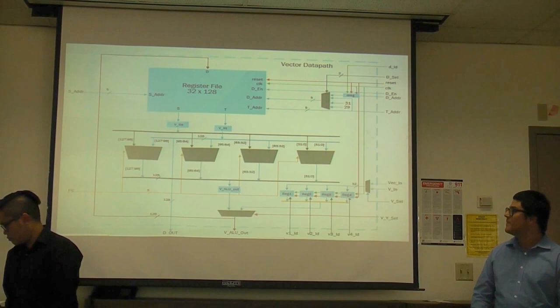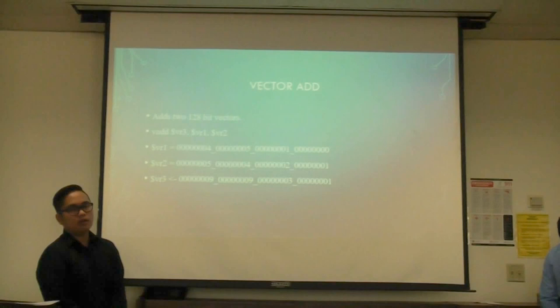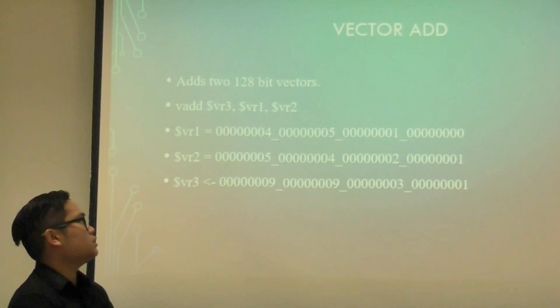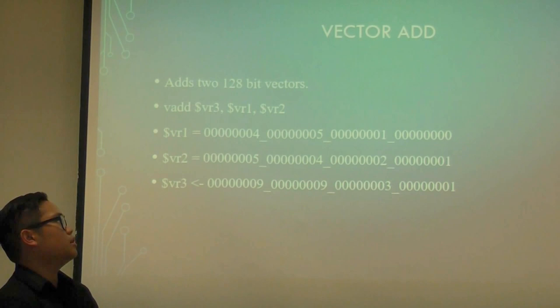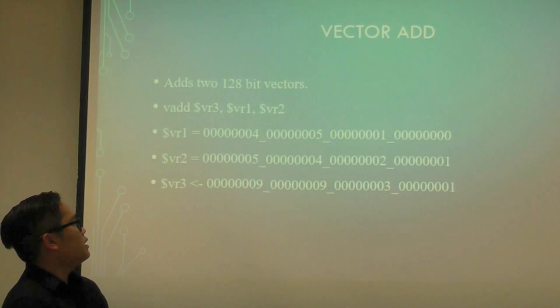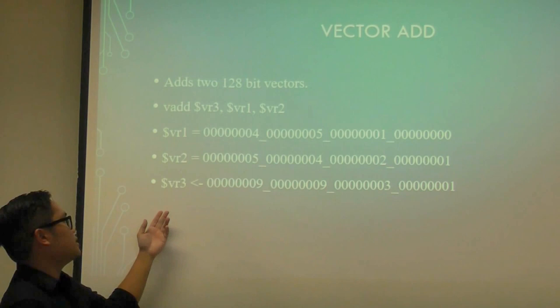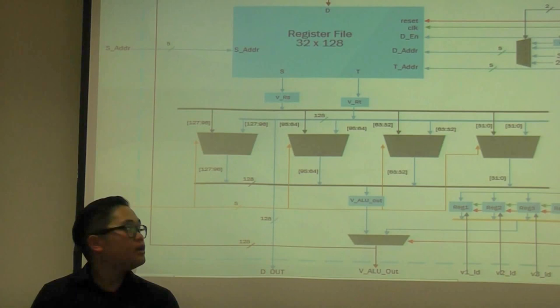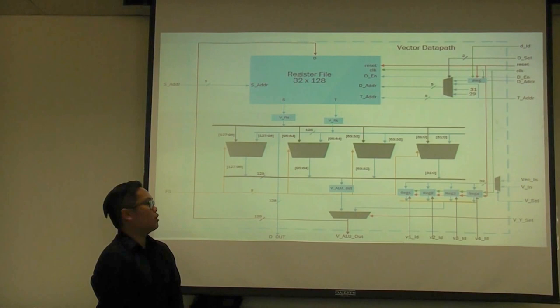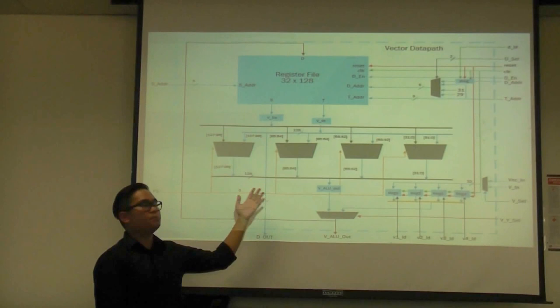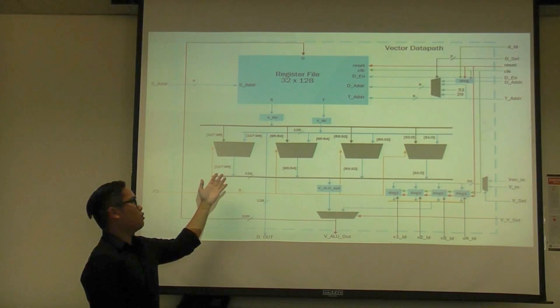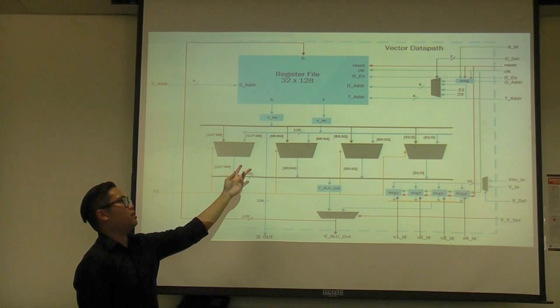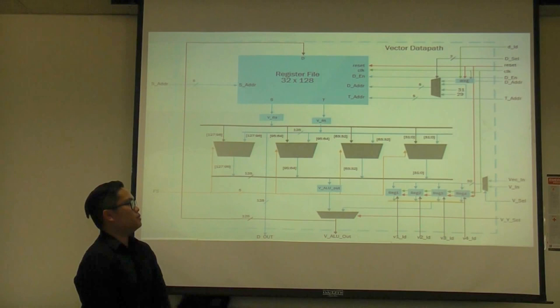Now we have vector add. It adds two 128-bit vectors. It's very similar to the add instruction, but here we have four separate ALUs to go through the operands. The two operands will be in VRS and VRT, and after the operation is performed it will go through the vector ALU result.